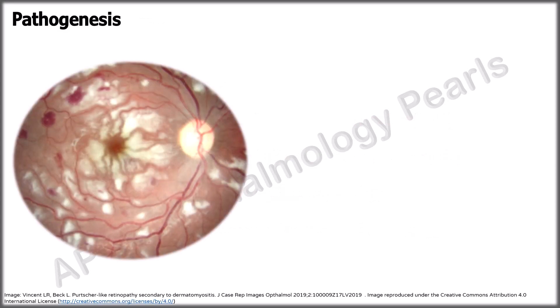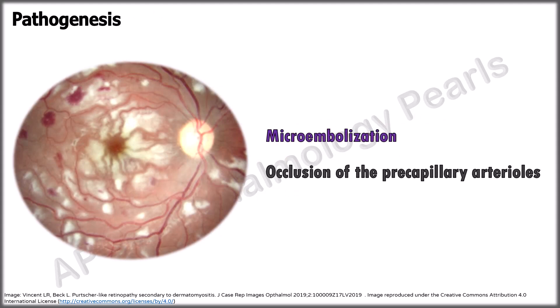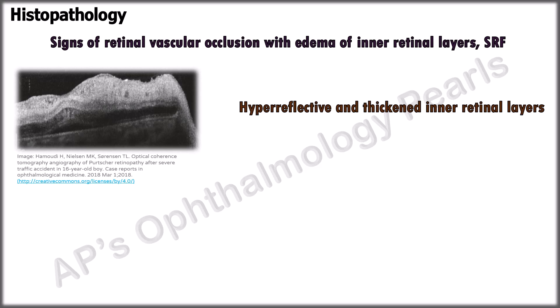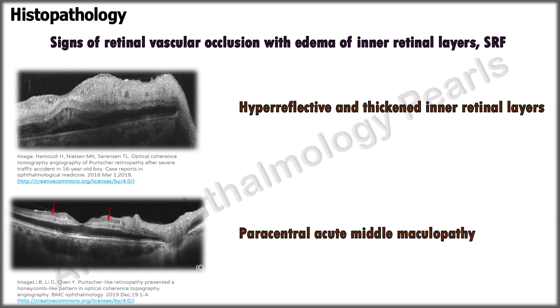The most currently accepted theory of pathogenesis is microembolization causing occlusion of the precapillary arterioles and microvascular infarct of the retinal nerve fiber layer, forming cotton wool spots. Histopathology shows signs of retinal vascular occlusion, evidenced on OCT by hyper-reflective and thickened inner retinal layers, a sign of retinal ischemia. Sometimes paracentral acute middle maculopathy, a sign of ischemia of the intermediate and deep retinal capillary plexus, may also be seen.